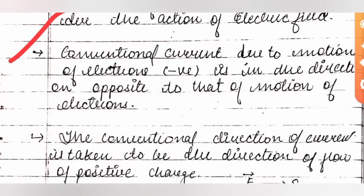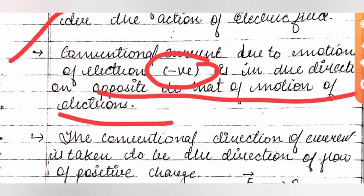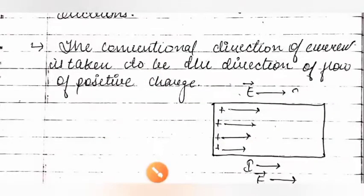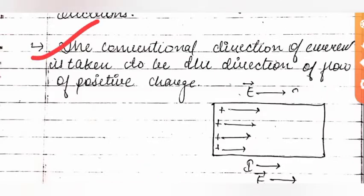The conventional current direction is opposite to the motion of electrons. The conventional direction of electric current will always be along the direction in which positive charges move. The direction of current is taken to be the direction of the flow of positive charges.